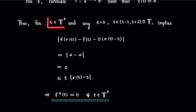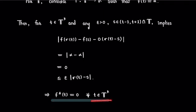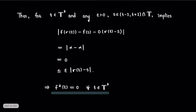So the delta derivative of f is 0 for all points t in the set T^k, since we considered an arbitrary point in T^k. Therefore, the derivative of f is 0 for all t belonging to T^k, and this completes our solution.